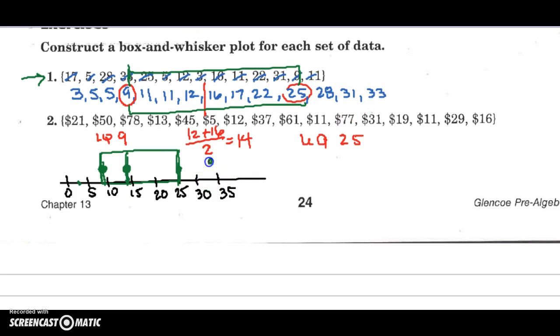The high whisker is at 33. And our low whisker is at about 3. And there's our box with its whiskers.